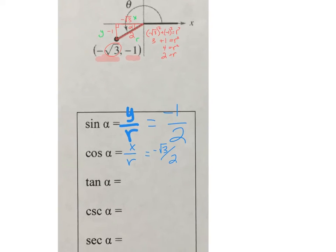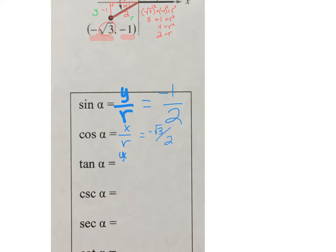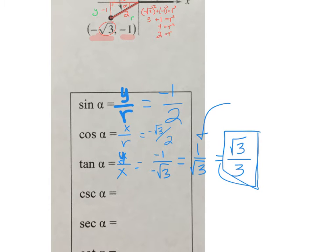The tangent is the y length to the x length. The y was negative 1 and the x was negative root 3, so that becomes a positive 1 over root 3, which if we rationalize becomes root 3 over 3. This is what you'll see on your standardized test, but for calculus nowadays 1 over radical 3 is perfectly okay to leave it like that. Ask your teacher how they want it because they're the one that's going to give you the grade.